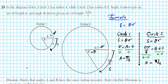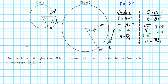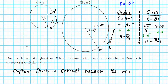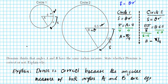Is Dominic correct? Yes. Dominic is correct because the angle measure of both angles A and B are equal to π/4 radians. Since the angle measures of both equal π/4, Dominic is correct.